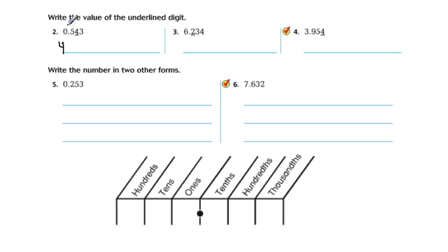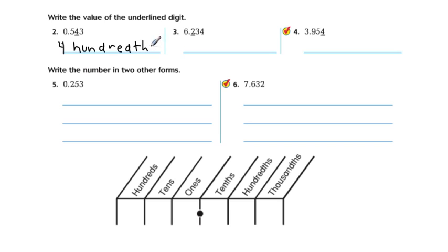The tenths place is 5. But this 4 is in the hundredths place, and so the value of that is 4 hundredths. That's 'hundred' with a 'th' on it.